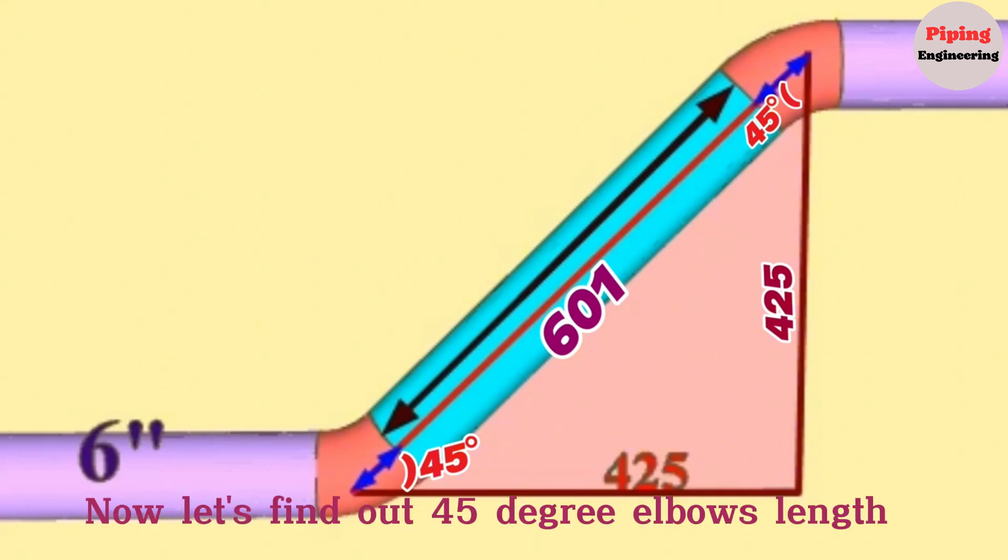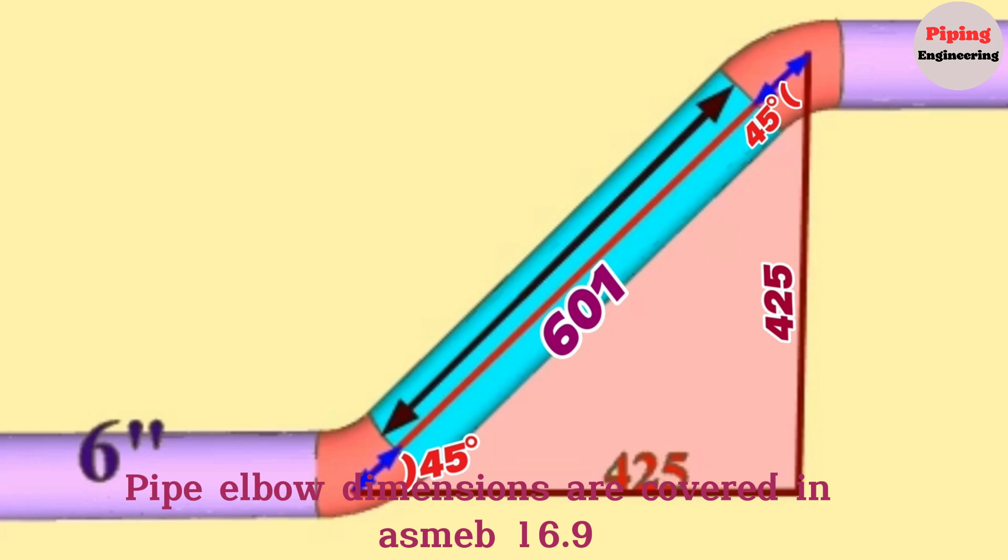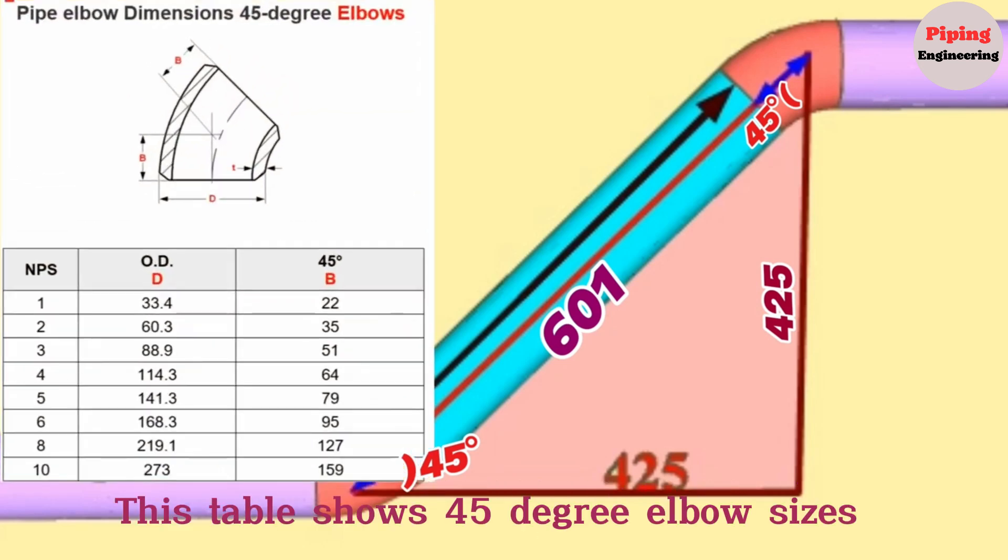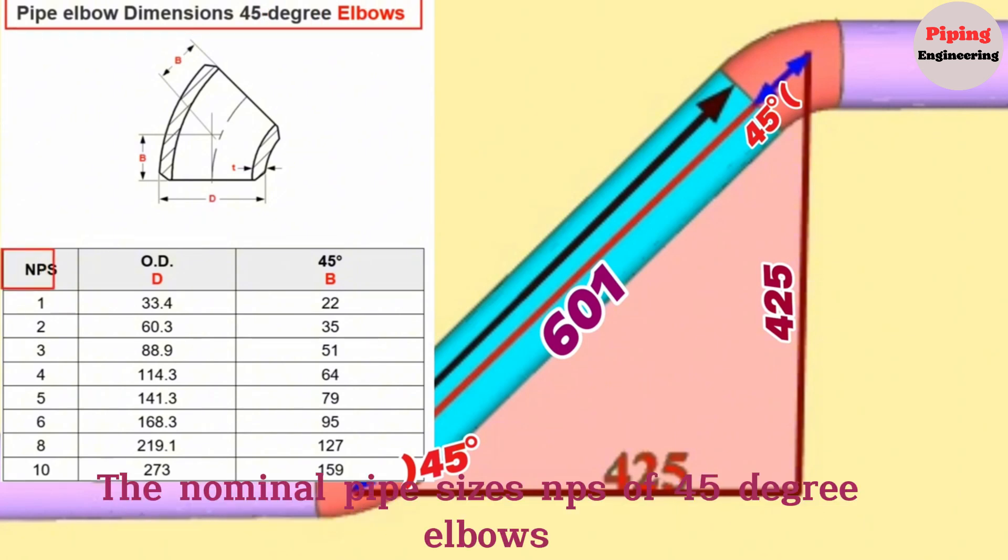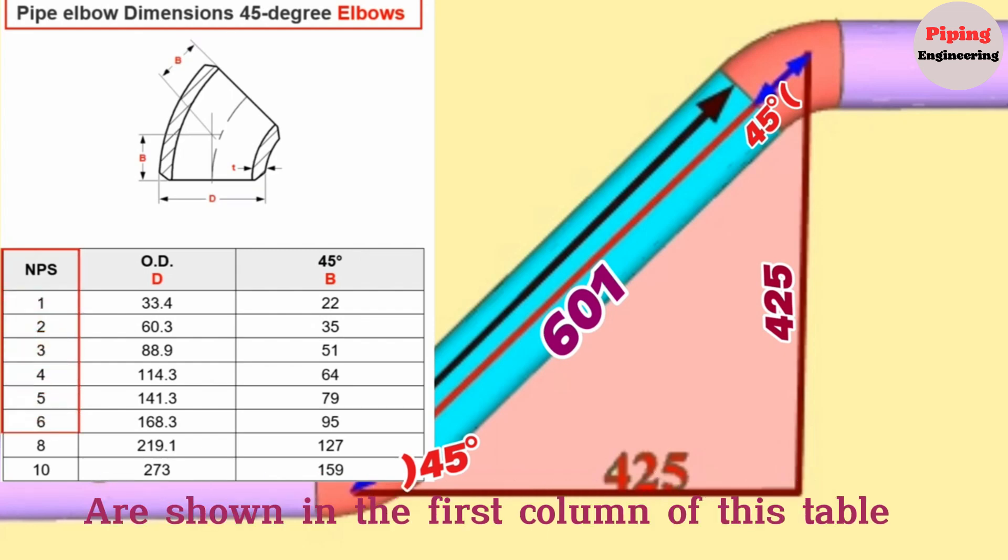Now let's find out the 45-degree elbow lengths. Pipe elbow dimensions are covered in ASME B16.9. This table shows 45-degree elbow sizes for nominal pipe sizes from 1 to 10. The nominal pipe sizes (NPS) of 45-degree elbows are shown in the first column of this table.